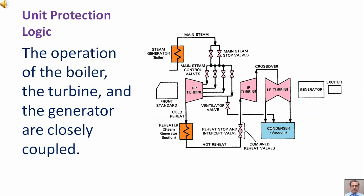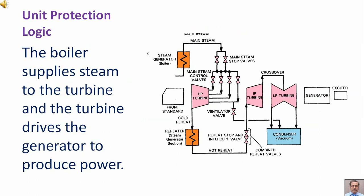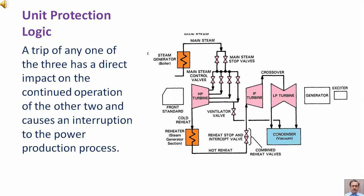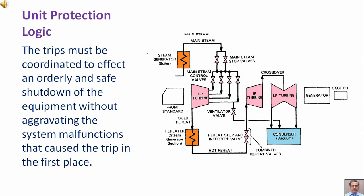The operation of the boiler, the turbine, and the generator are closely coupled. The boiler supplies steam to the turbine and the turbine drives the generator to produce power. A trip of any one of the three has a direct impact on the continued operation of the other two and causes an interruption to the power production process. The trips must be coordinated to effect an orderly and safe shutdown without aggravating the system malfunctions that caused the trip in the first place.